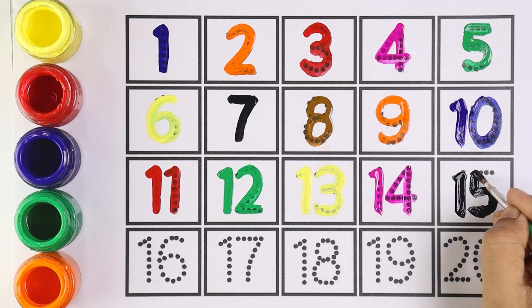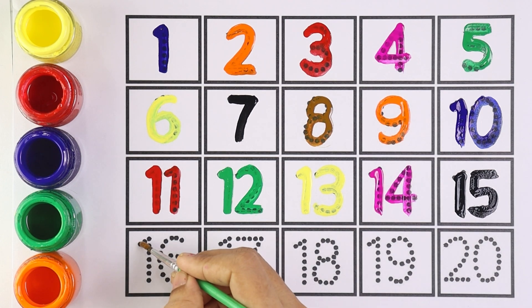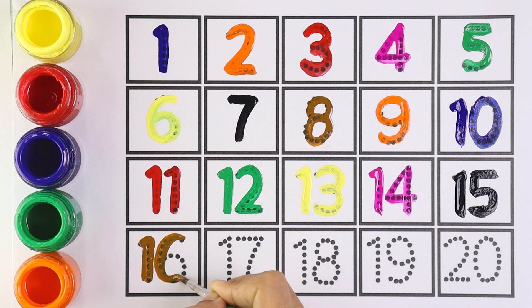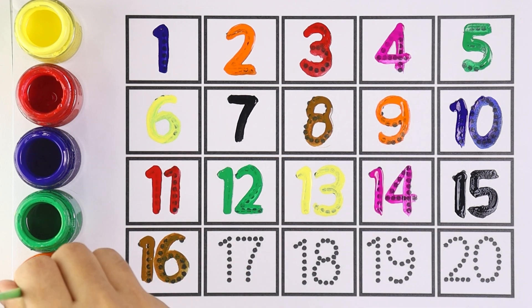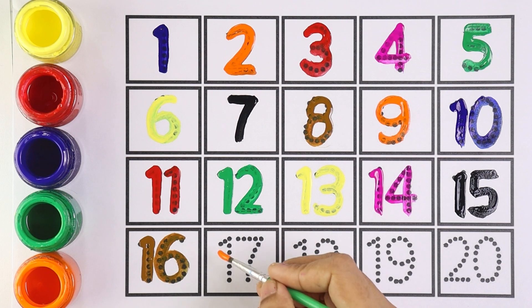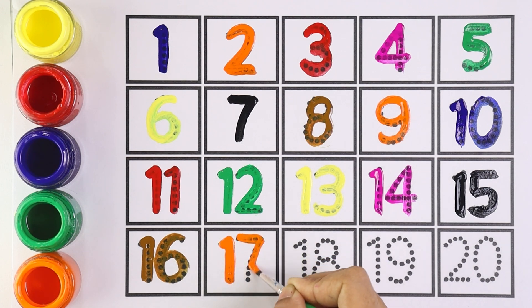Brown color for number sixteen. One and six makes the number sixteen. Orange color for number seventeen. Number seventeen.